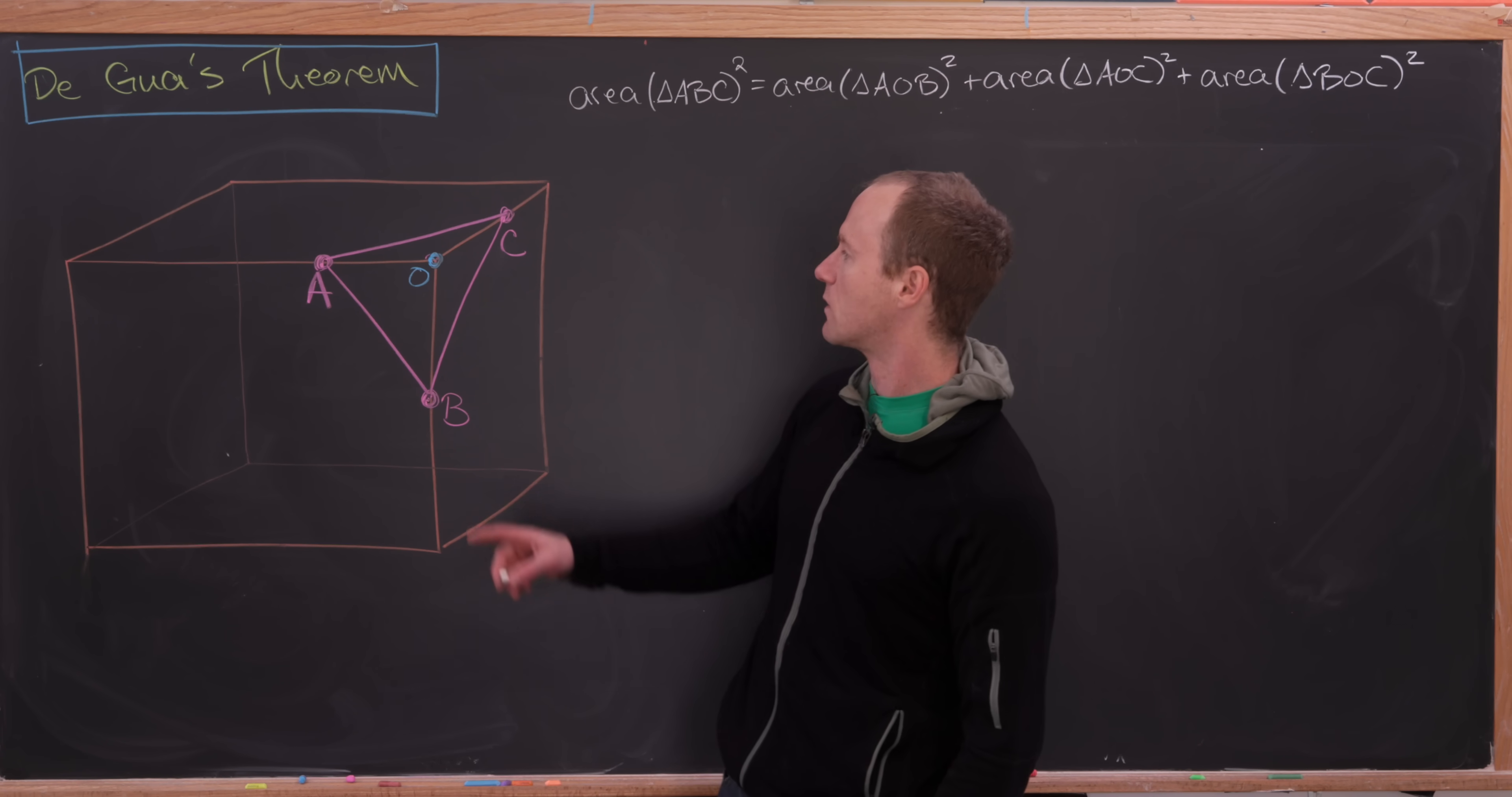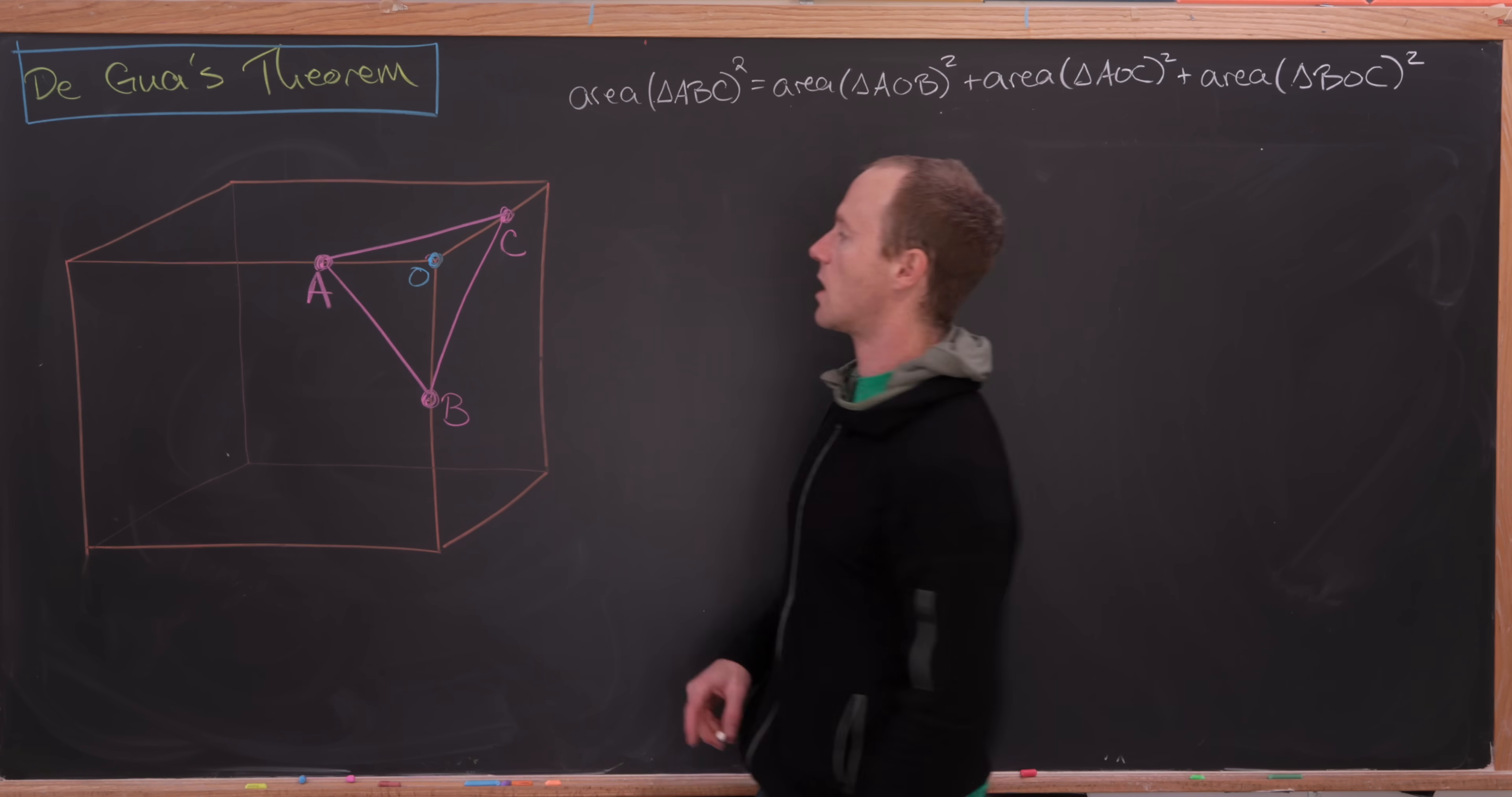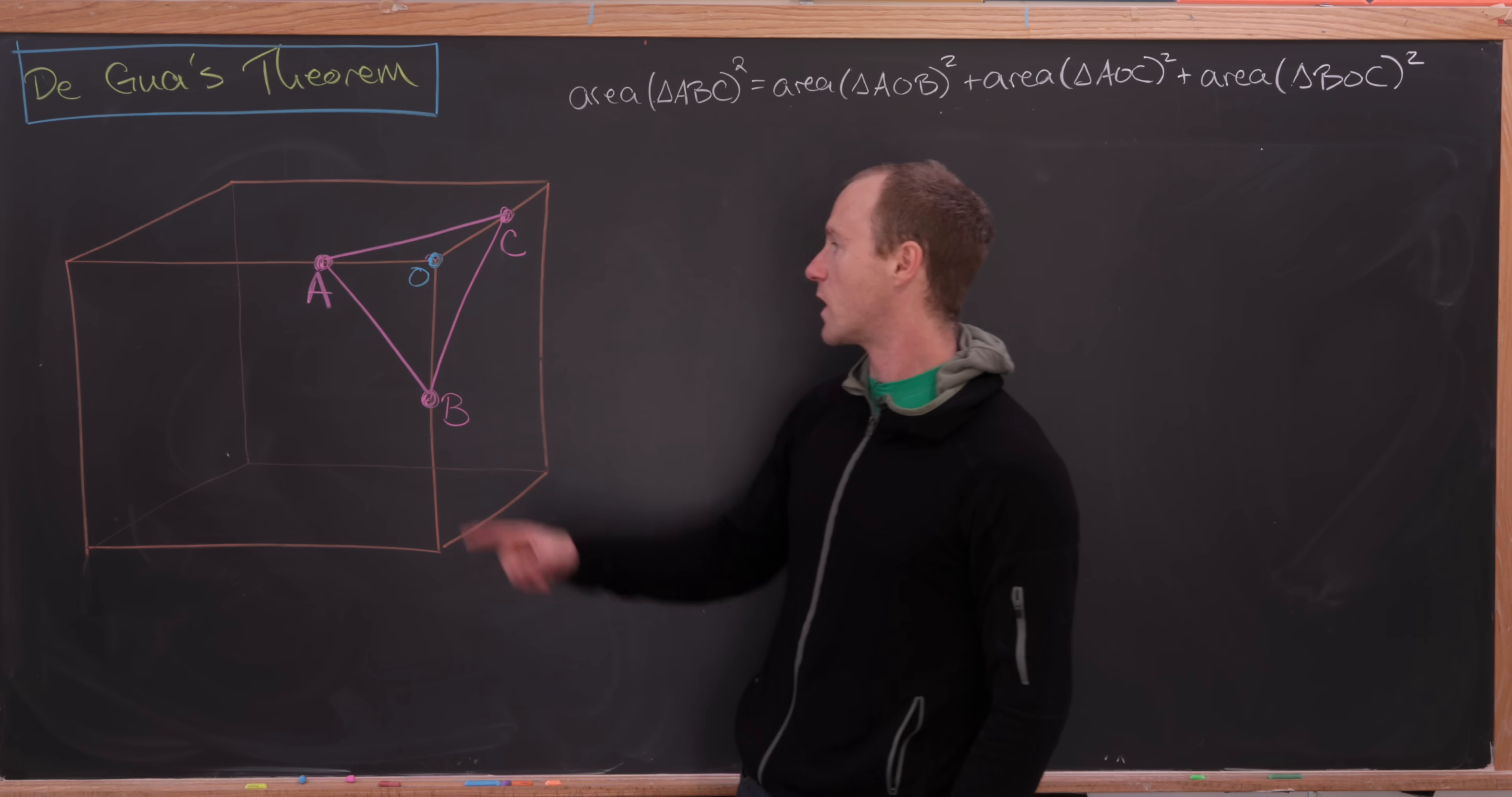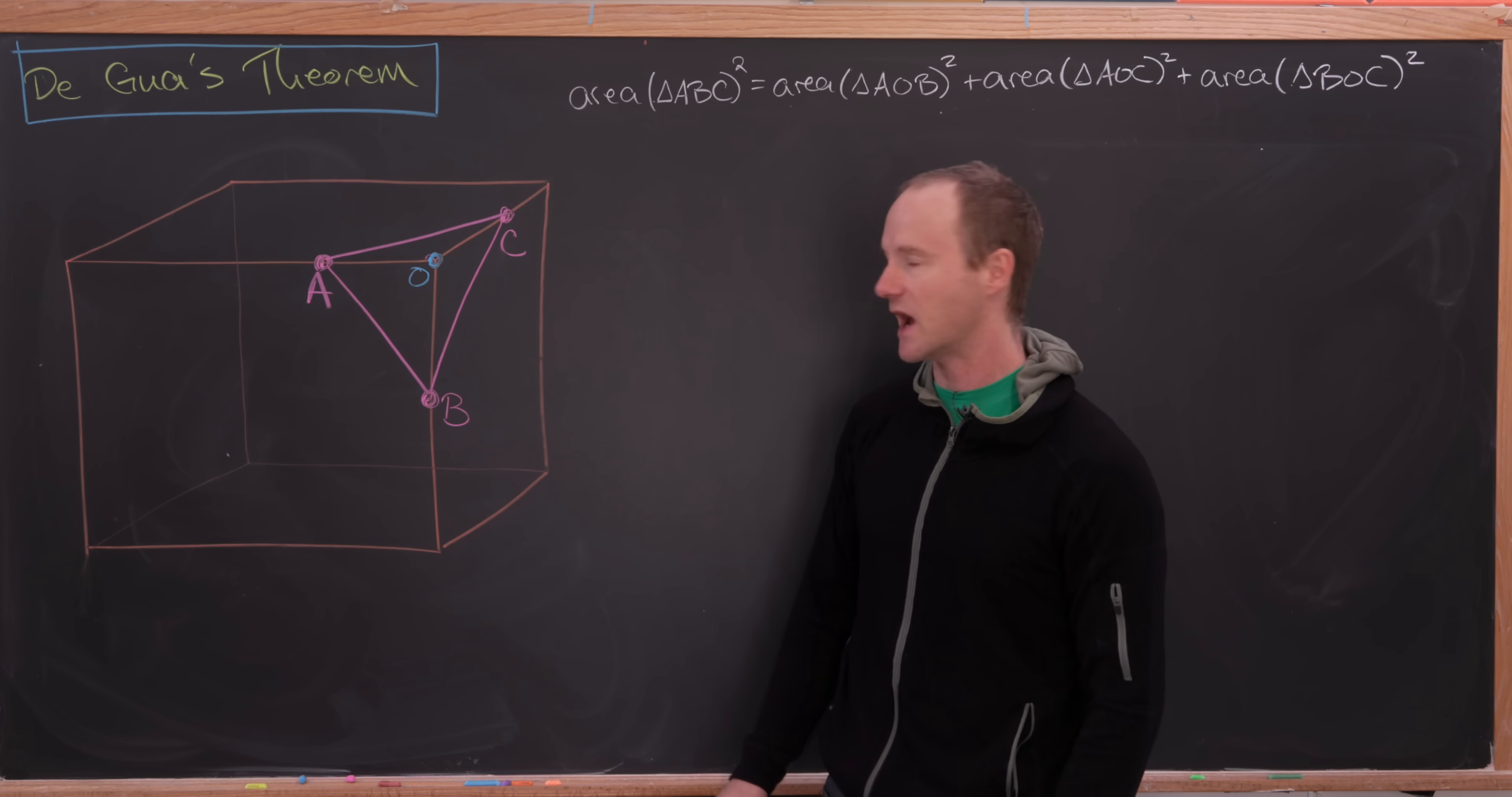Those triangles, well, one of the vertices is on the corner, and then two of the other vertices are on attached sides. So we've got this triangle A-O-B, which is on this side that's facing us, whereas this triangle A-O-C is on the top, and then this triangle B-O-C is on this right side here.